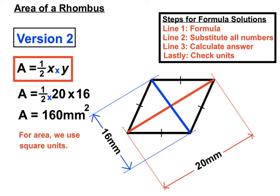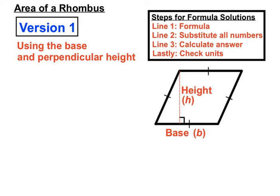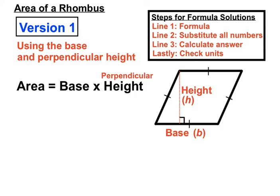So that's version two, when we're given diagonals. Okay, so version one, just to recap. We use the base and the perpendicular height. And use A equals base times height, as long as that height's perpendicular. So when we're given those sorts of numbers, we'll use that version of the formula.